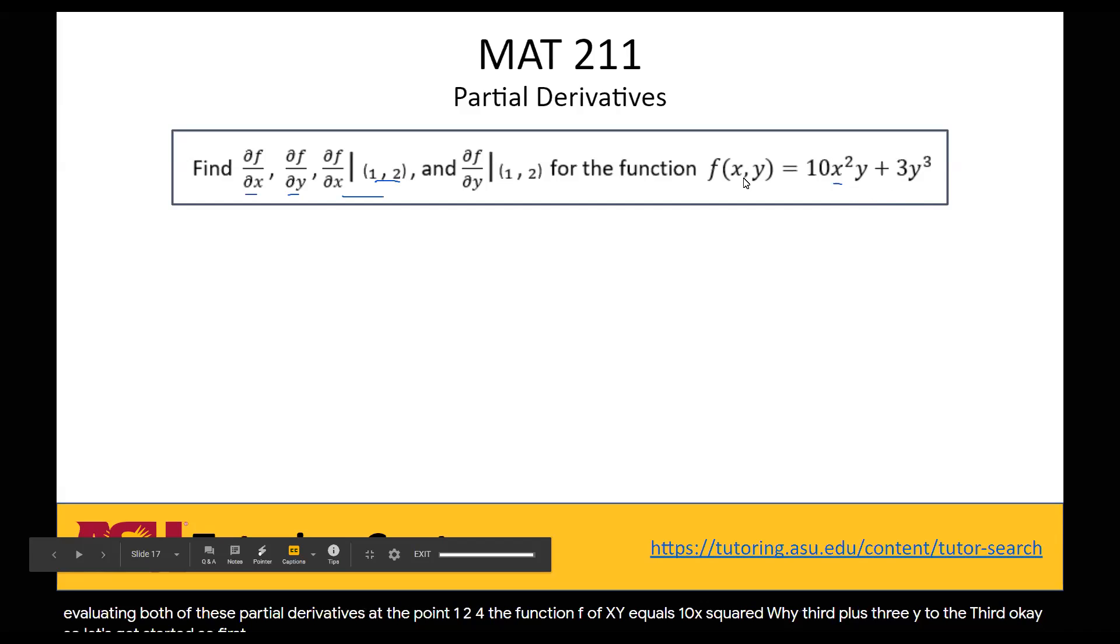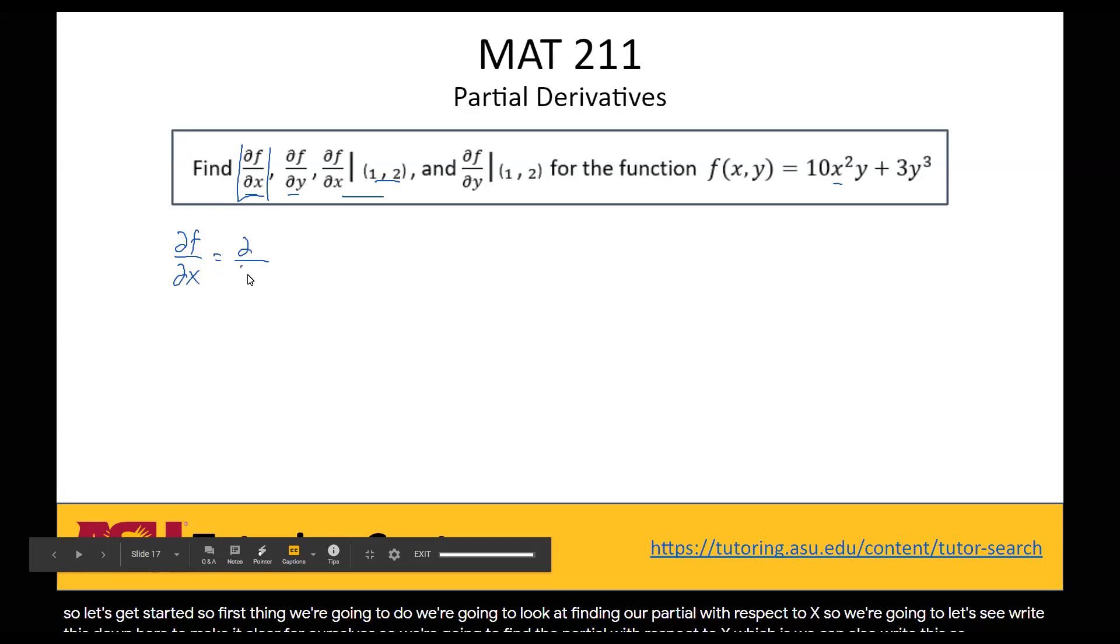So first thing we're going to do, we're going to look at finding our partial with respect to x. So we're going to find the partial with respect to x, which we can also write as the partial with respect to x of our function explicitly, which is 10x squared times y plus 3y cubed.